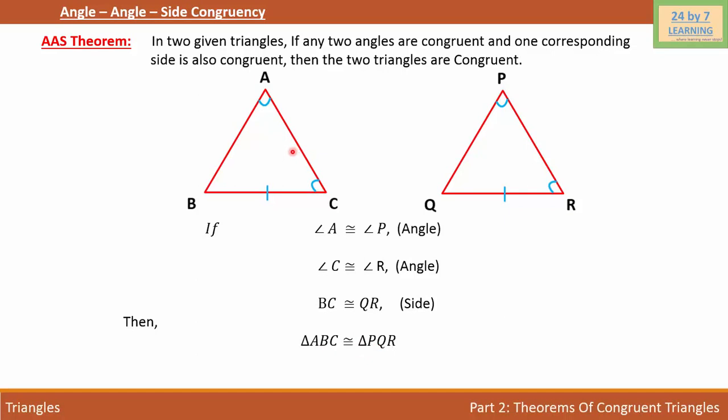In other words, we can say that if two angles of first triangle is congruent to the two angles of second triangle and one side of first triangle is congruent to the one side of second triangle, then both the two triangles are congruent.